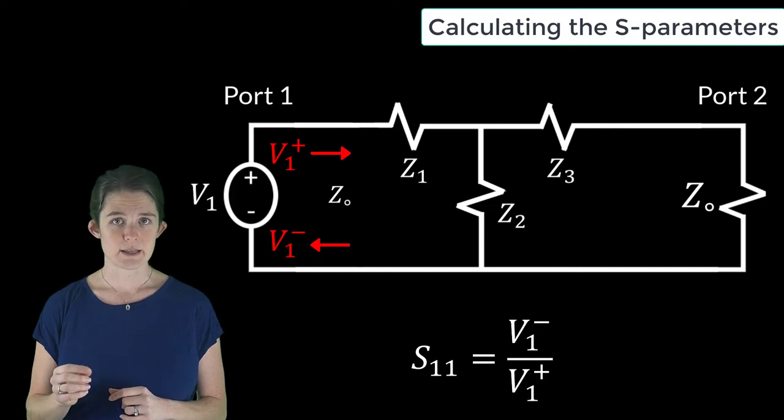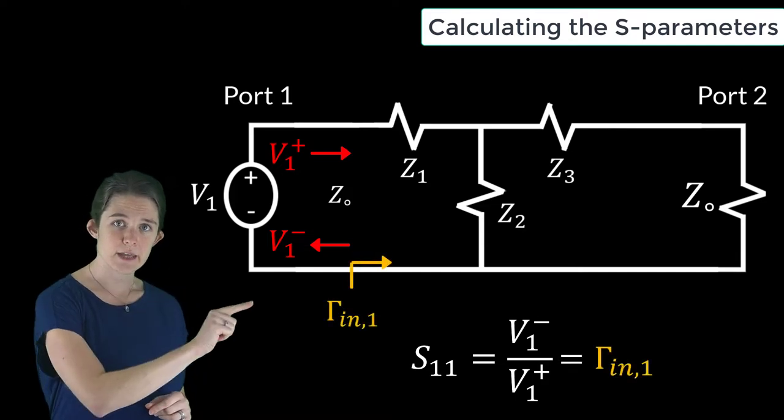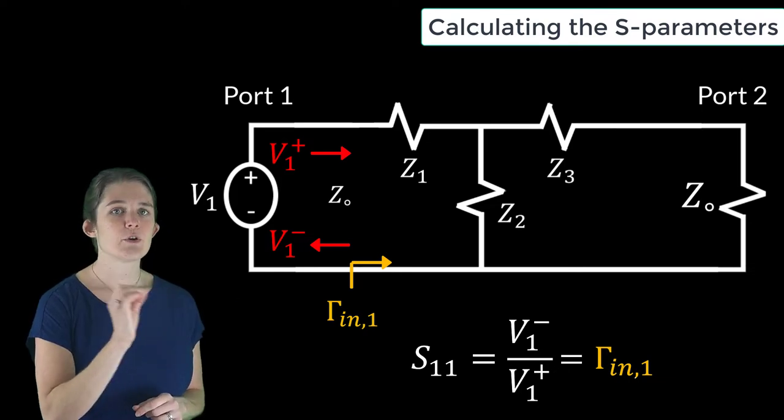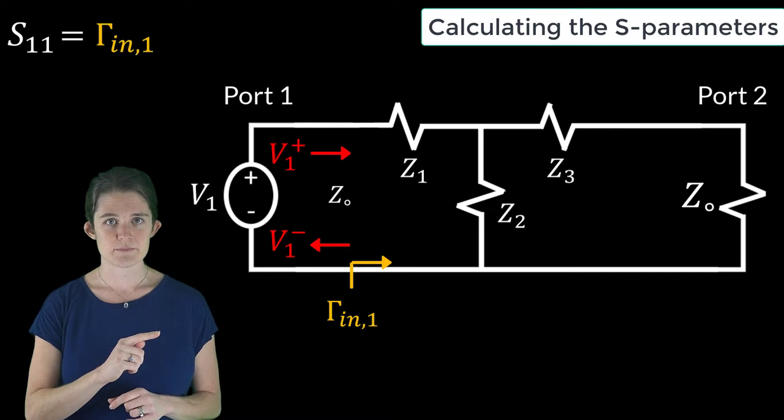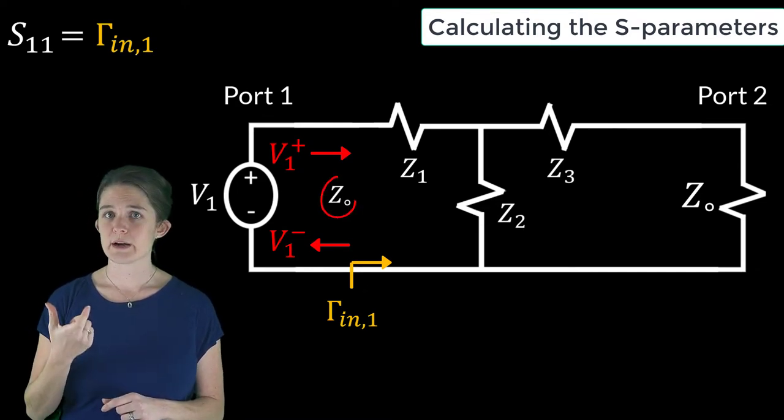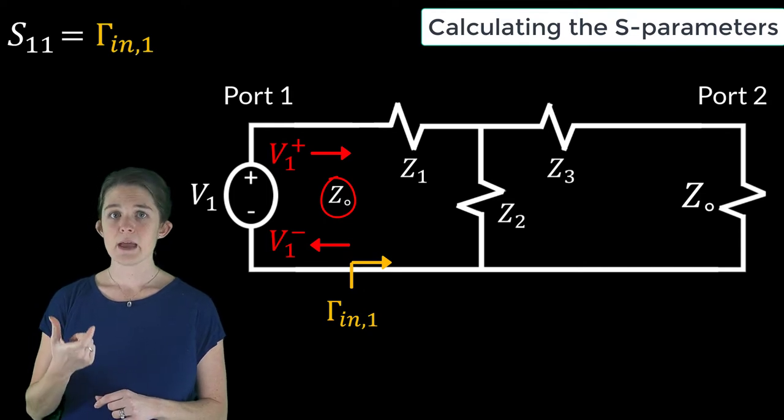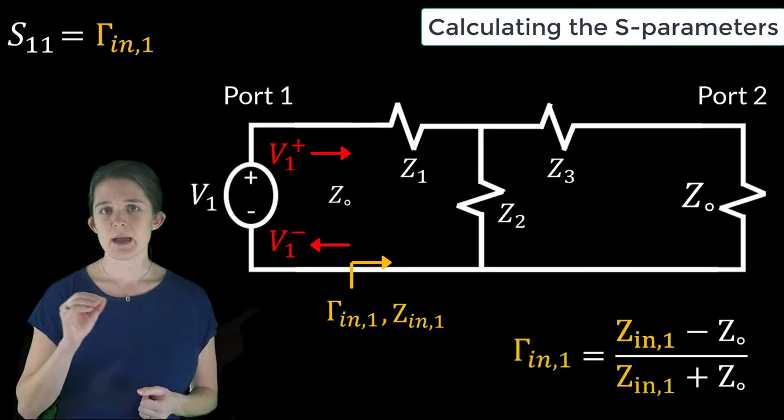So S11 is equal to gamma in1 for this measurement configuration. Gamma in1 is set by the relationship between the port 1 characteristic impedance Z0 and the input impedance to the system seen from port 1 according to this equation.